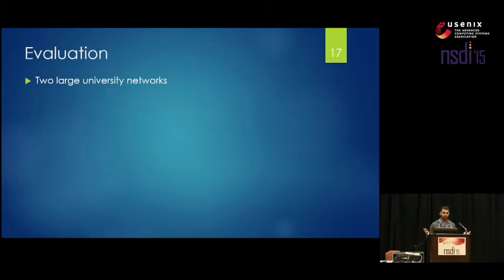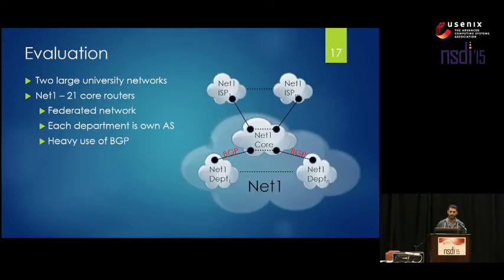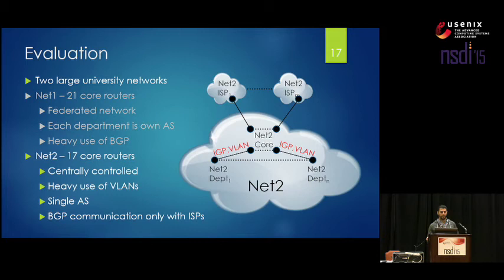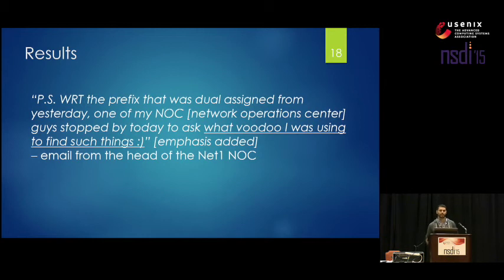We evaluated Batfish on two large university networks — Net1 and Net2. They are qualitatively different: Net1 is composed of a core of 21 routers in a federation where every department is connected to the core through BGP peering, whereas Net2 is a centralized network with a core of about 17 routers that segments traffic for departments using VLANs and IGP. We got good feedback from the operators of Net1. One operator sent us an email saying that a network operations center guy stopped by to ask what voodoo they were using to find such things.